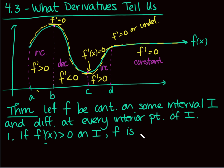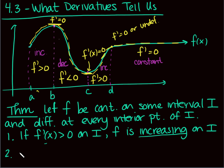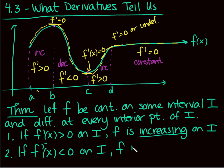If the derivative is positive on I, then F is increasing on I. A positive derivative tells us we have a positive slope — a positive rate of change — so we're increasing. If the derivative is negative — less than zero — on some interval I, then F is decreasing on I.